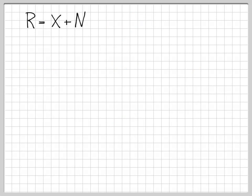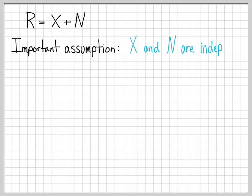The received sample is given by the random variable X plus the random variable N. An important assumption here is that X and N are independent. This is reasonable because N is our channel noise and X is related to the signals we're sending. The channel noise just does what it does — it is not influenced at all by what we transmit. The thermal noise of the channel just is.